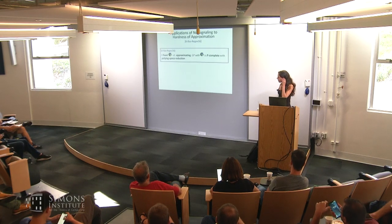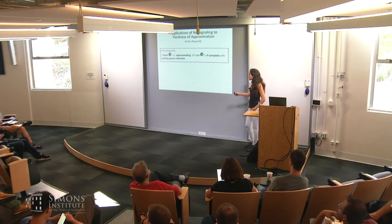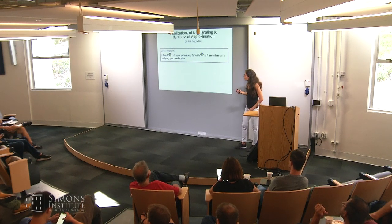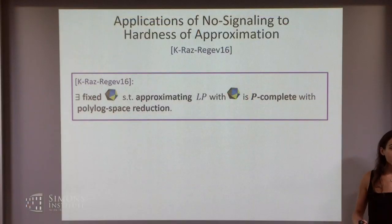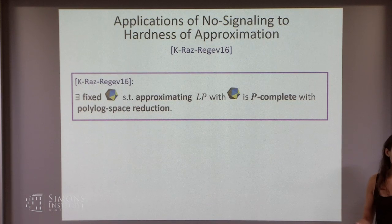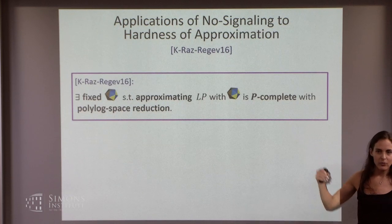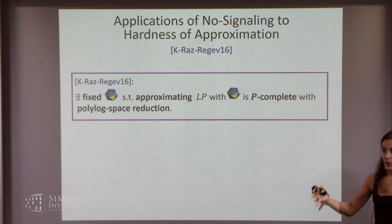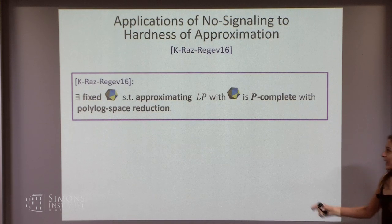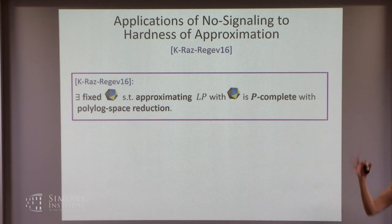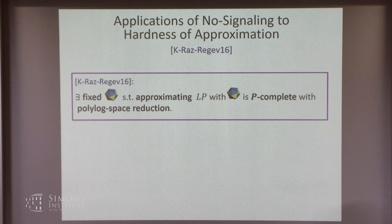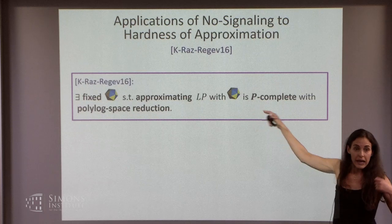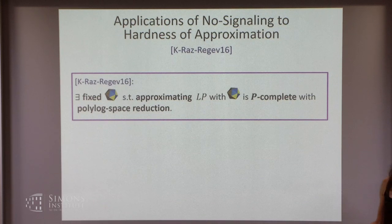The last application is to hardness of approximation. What we showed is how to use no-signaling to get hardness of approximation for space. Before, PCPs or MIPs were used to get hardness of approximation of time; we showed that no-signaling MIP or PCP can be used to get hardness of approximation of space. In particular, there exists a fixed polyhedron such that approximating a linear program with this specific polyhedron is P-complete with respect to polylog space reduction.